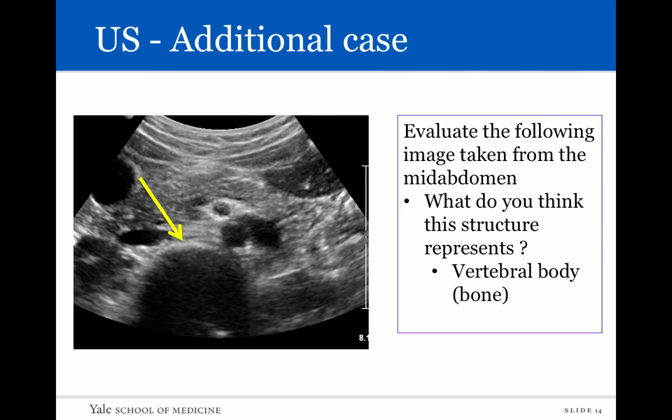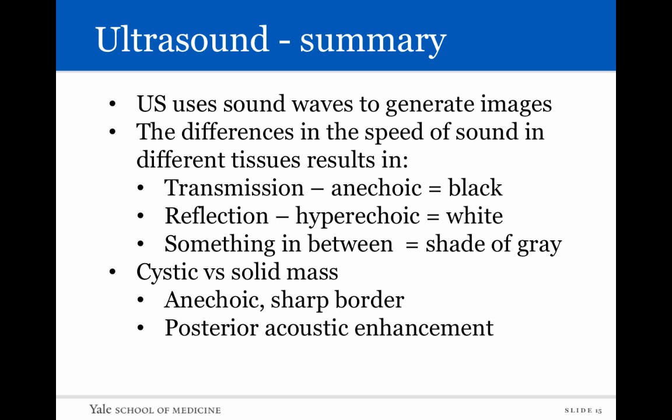In summary, unlike conventional radiography and CT imaging which use x-rays, ultrasound uses sound waves with no ionizing radiation — making it a great modality for young and pregnant patients. The difference in speed of sound within different tissues results in one of three actions: sound waves pass through completely (tissue appears anechoic or black), they are completely reflected (tissue appears hyperechoic or white), or something in between (different shades of gray). Cystic masses appear anechoic with sharp borders and posterior acoustic enhancement behind them, while solid masses show complex internal echogenicity.